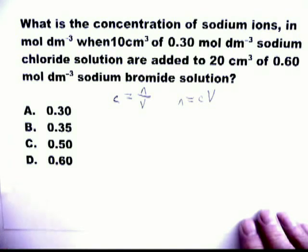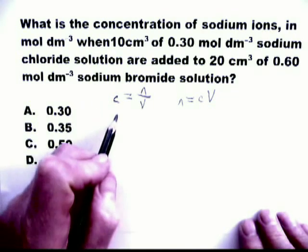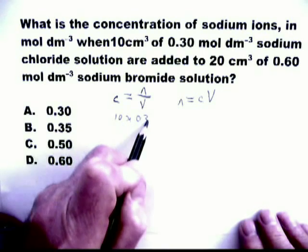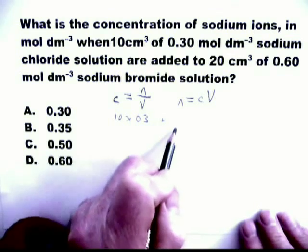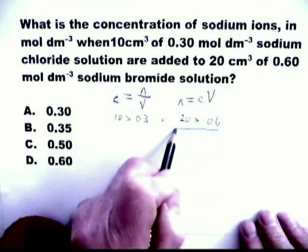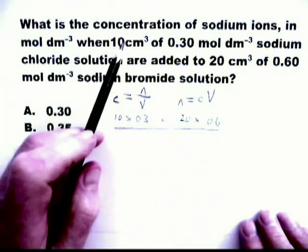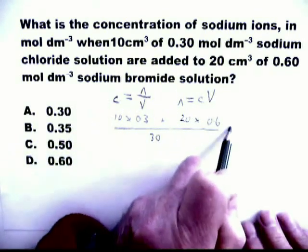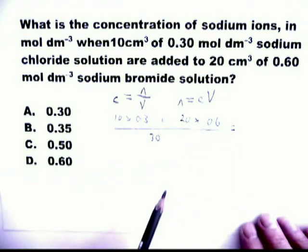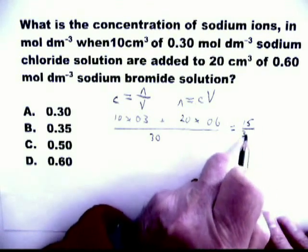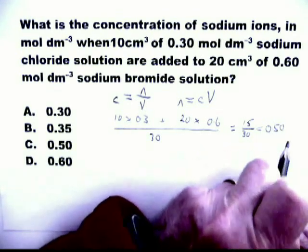Now I'm going to use the simplified version, as discussed before. I'm not going to introduce thousands. I'm simply going to do 10 times 0.3 plus 20 times 0.6, divided by the total volume, which is 10 plus 30. So 10 plus 20 equals 30. That comes to 15 over 30, which is 0.5. And so C is the answer.